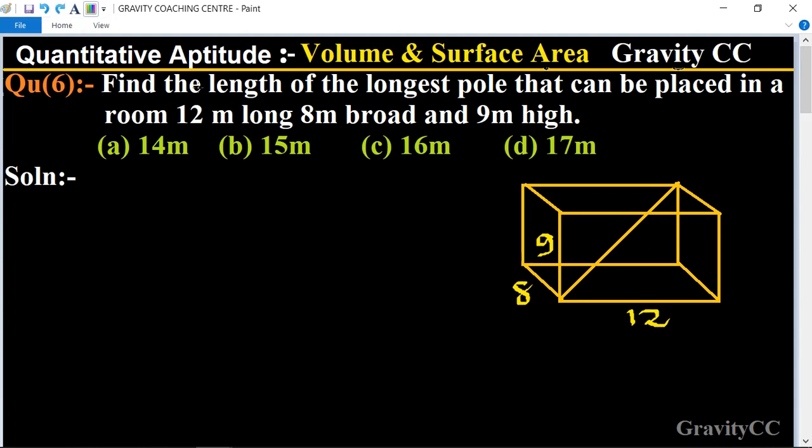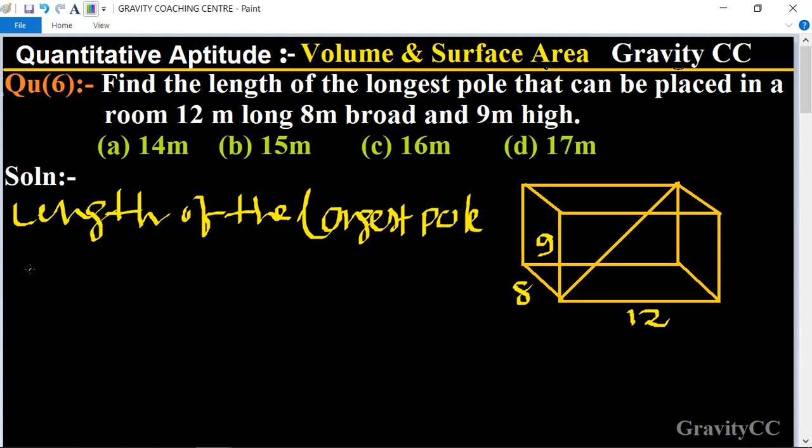Here, the length of the longest pole means the diagonal of the room. So the length of the longest pole equals the length of the diagonal of the room.